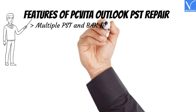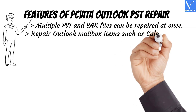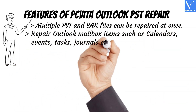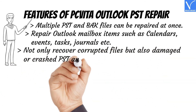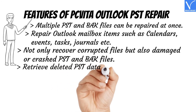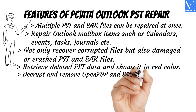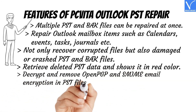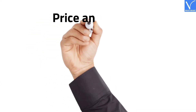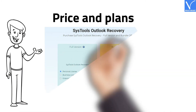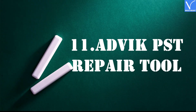Features of PCVITA Outlook PST Repair: Multiple PST and BAK files can be repaired at once. Repairs Outlook mailbox items such as calendars, events, tasks, journals, etc. Not only recovers corrupted files but also damaged or crashed PST and BAK files. Retrieves deleted PST data and shows it in red color. Decrypts and removes OpenPGP and S/MIME email encryption in PST files. Don't export empty folders feature is also available. The price and plans of PCVITA Outlook PST Repair Tool are shown on the screen. Check the description for the product link.